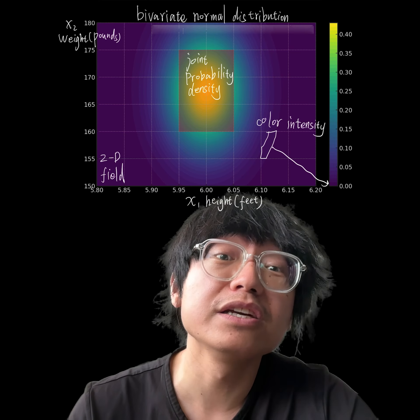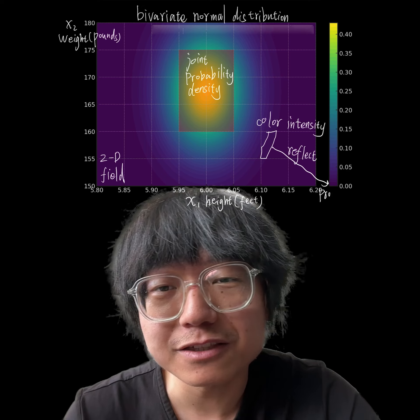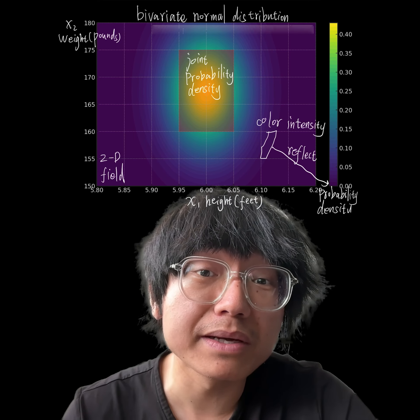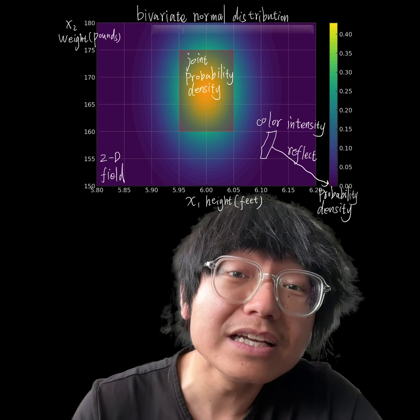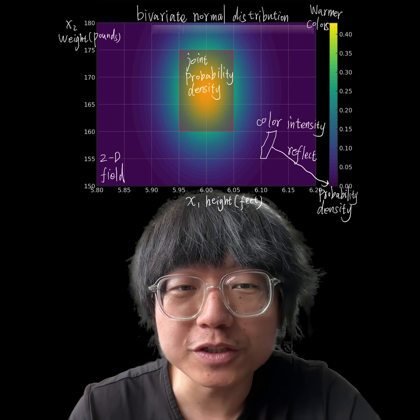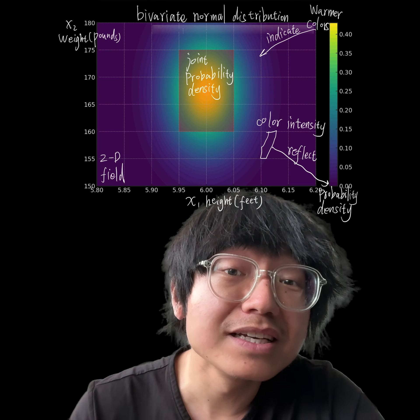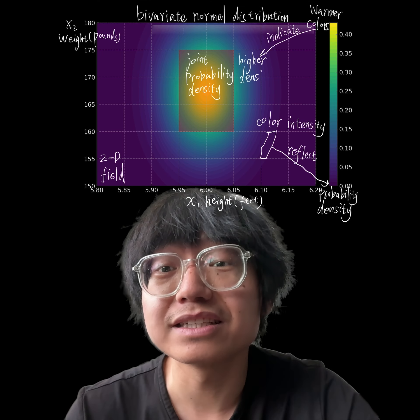This plot visualizes the joint probability density of height and weight as a two-dimensional field, and the color density reflects the probability density at each point with warmer colors indicating higher densities.